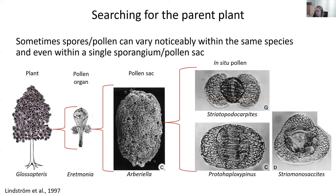To get even more complicated: Sophie Lindstrom showed in a 1997 paper that sometimes a single pollen sac from a Glossopteris plant can yield different types of in situ pollen. The different morphologies shown here were all extracted from one single pollen sac, and would be placed by a specialist into different genera. So it's very important to understand which plants would produce what kind of pollen and spores, because all three of those genera that Sophie would find dispersed in the fossil record would actually belong to just one single plant, reflecting just one single environment and one single climate signal.